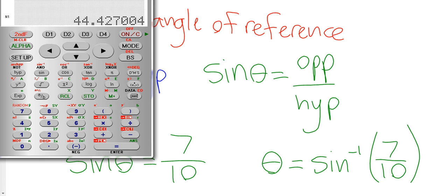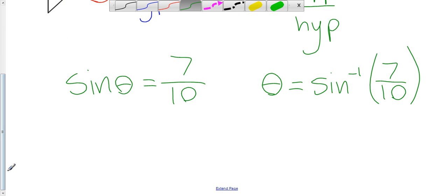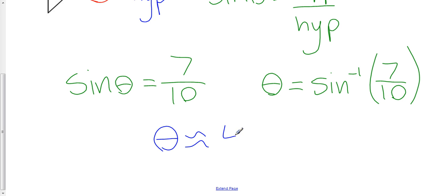And that gives me 44.427. So if we round this, we say that's about 44.4 degrees. So theta is approximately 44.4 degrees.